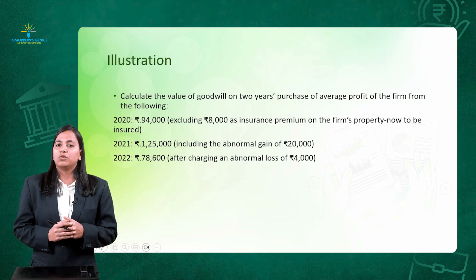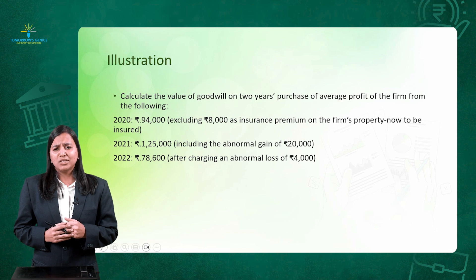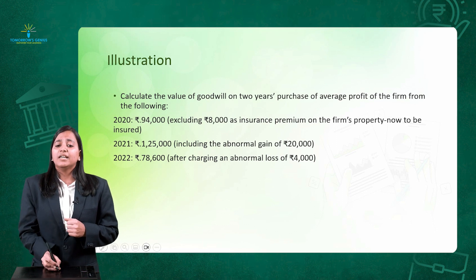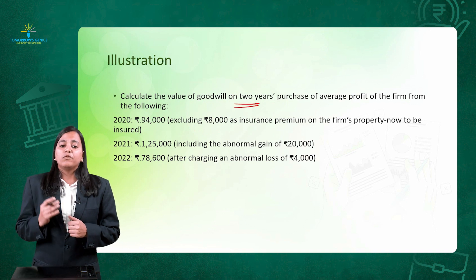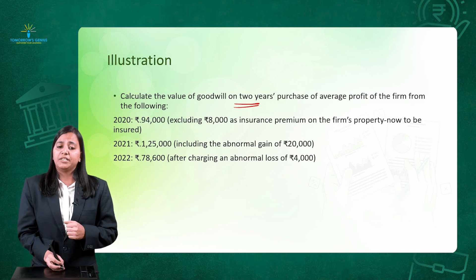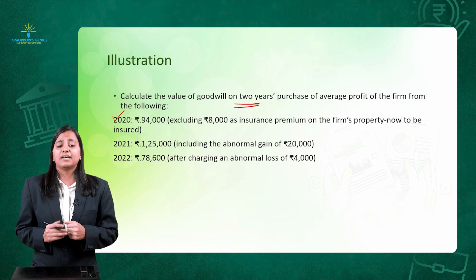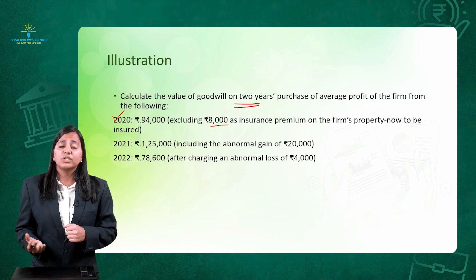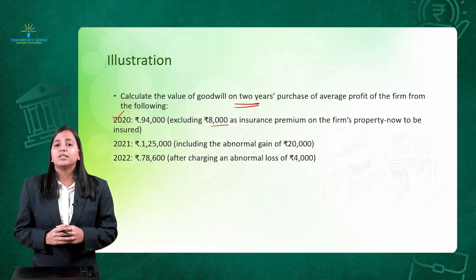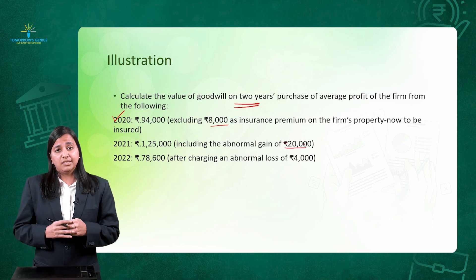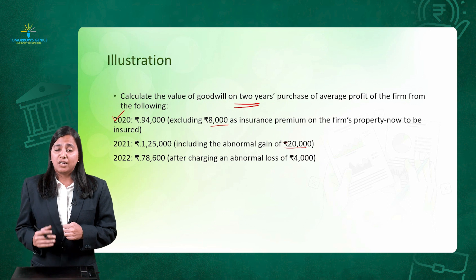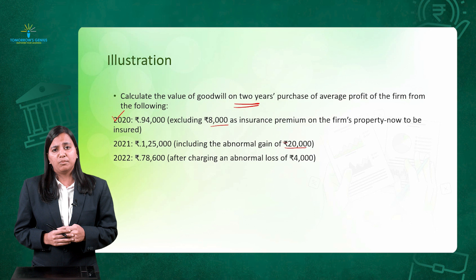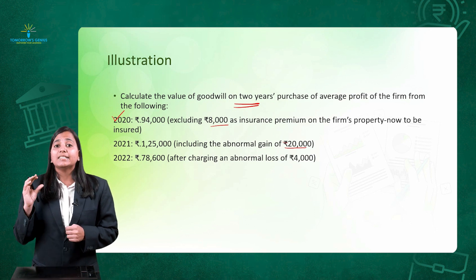Let us solve an illustration. Calculate the value of goodwill on 2 years of purchase of average profit. As you can see, the number of years of purchase is given directly in the question as 2. Three years of data is provided. In 2020, the profit earned is 94,000 rupees but it includes 8,000 rupees for insurance premium — an additional future expense to be deducted. In 2021, profit is 1,25,000 rupees which includes an abnormal gain of 20,000 rupees to be deducted.